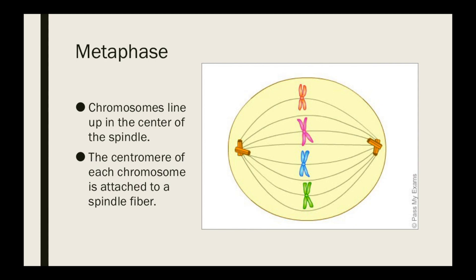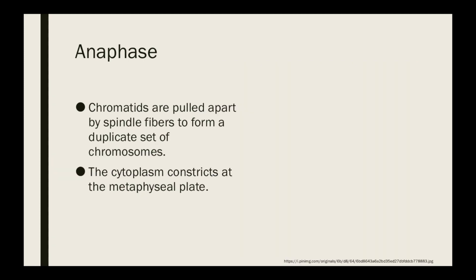In metaphase, you can see the chromosomes are in full X format — they're pairs. When the cell divides, half the chromosome will go to the right and half will go to the left. In anaphase, the chromatids are pulled apart by spindle fibers to form a duplicate set of chromosomes, and the cytoplasm starts to constrict at the metaphyseal plate. I always picture the chromatids yelling 'help me, sister, I love you, don't leave me' as they're getting pulled apart.